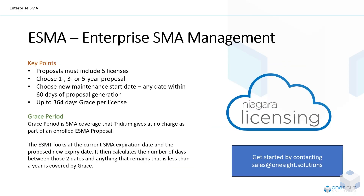So now that we've spoken about it, how do we actually put it into place? To align your Niagara licenses into a single agreement, including the expired SMAs like we spoke about, you must have a minimum of five licenses. You can choose one, three or five years, and your licenses are automatically updated too.